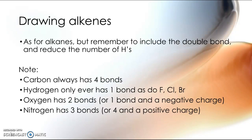Oxygen will always have two bonds unless it has one bond and a negative charge. Similarly, nitrogen will have three bonds or it can have four bonds with a positive charge, so like ammonium.